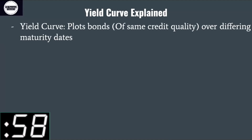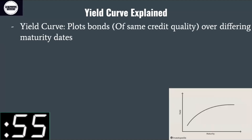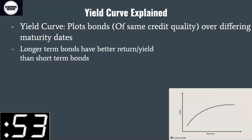The yield curve plots bonds of same credit quality over differing maturity dates. As you can see, it's upward sloping, meaning longer term bonds will have a better yield than shorter term bonds.